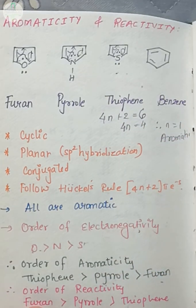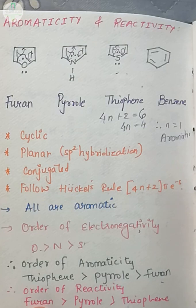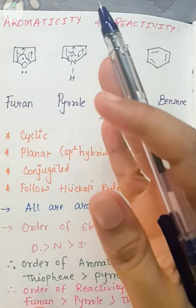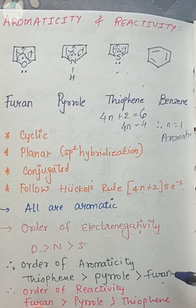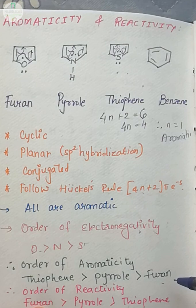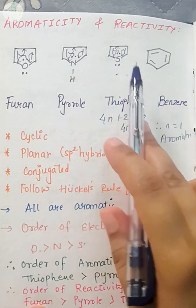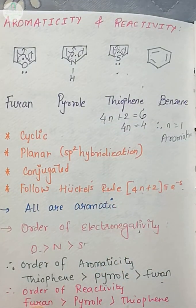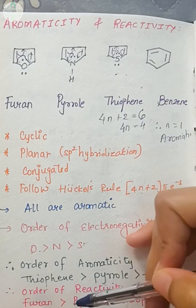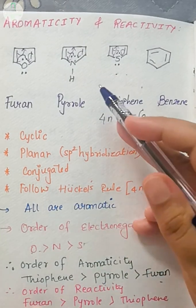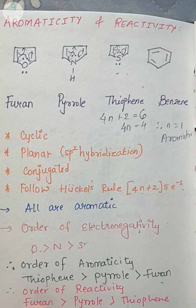So the order of aromaticity and the order of reactivity are exactly reverse. Furan is least aromatic, that means it is least stable. Therefore it is most reactive. So out of these three heterocycles, who will have the most reactivity? Furan. After furan comes pyrrole, and then it is thiophene.